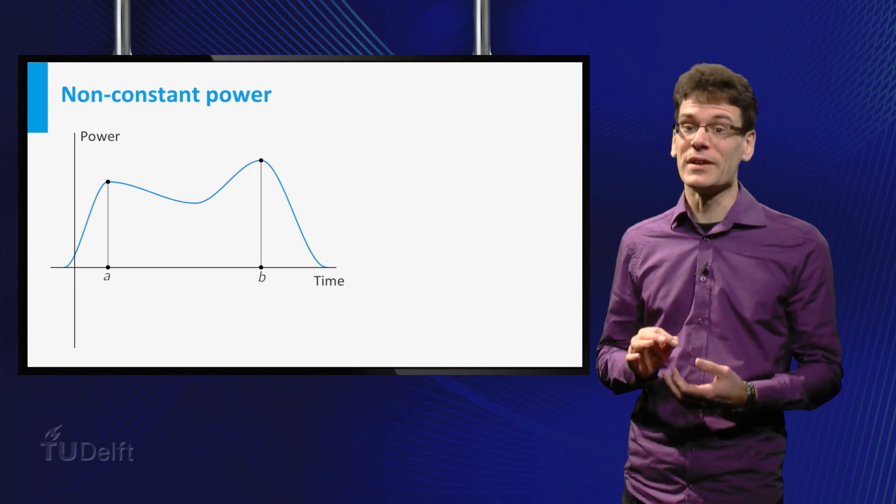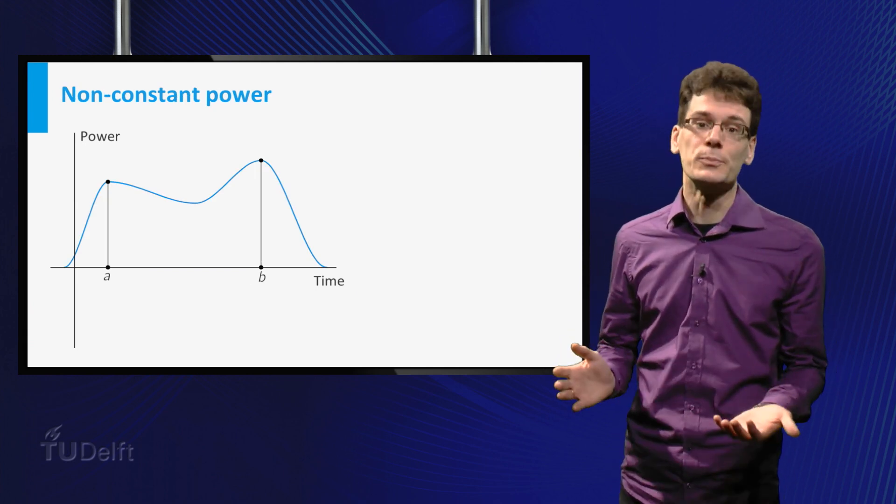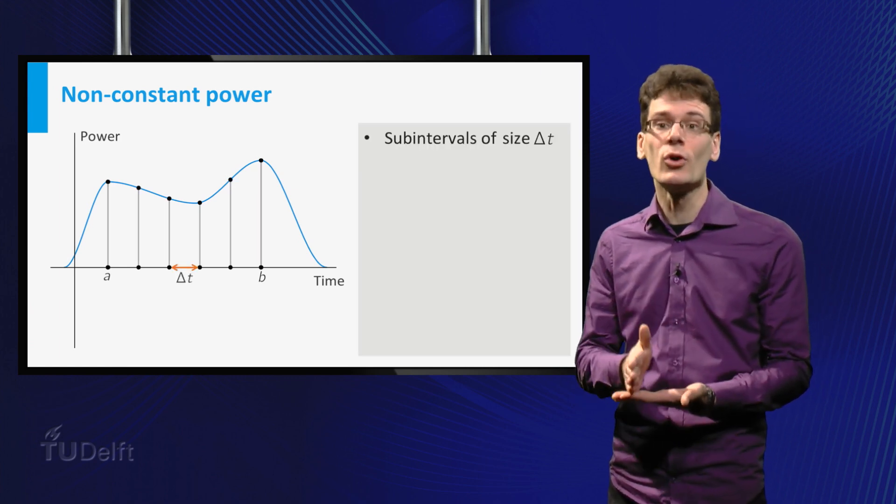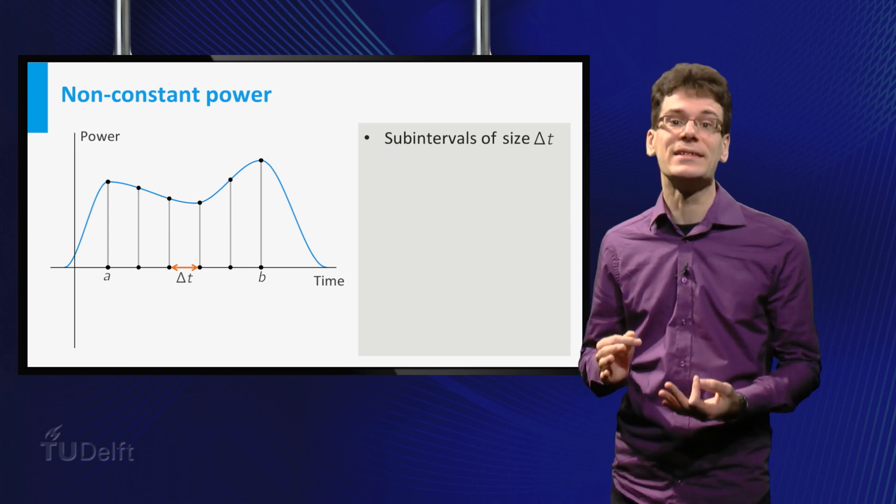But in general the power will not be constant. What can we do? The idea is the following: first divide the time interval into small subintervals, each of length delta T.